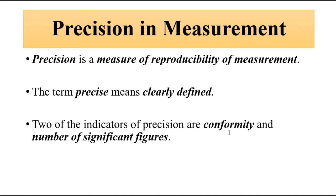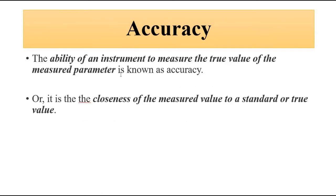Precision consists of two important indicators: first is conformity, and the second is number of significant figures. To understand precision, we also need to touch on accuracy, which is the ability of an instrument to measure the true value of a measured parameter. There are different ways of expressing accuracy, and error comes into play here. We want the instrument reading to be as close to the true value as possible, although it is almost impossible to exactly measure the true value.